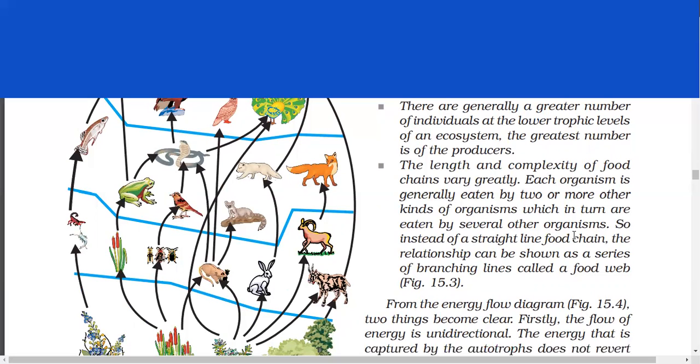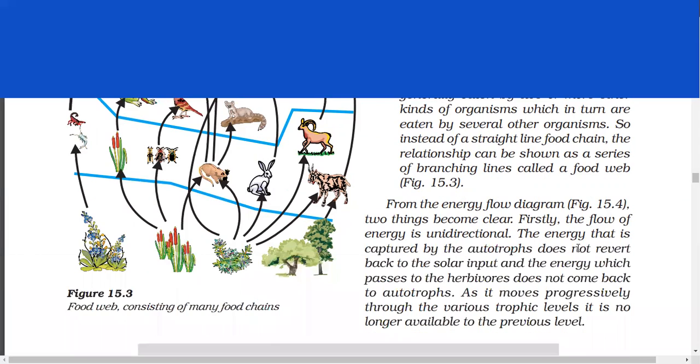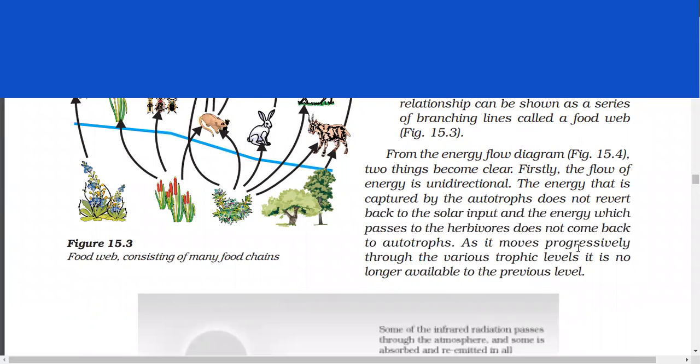Each organism is generally eaten by 2 or more other kinds of organisms which in turn are eaten by several other organisms. So, instead of a straight line food chain, the relationship can be shown as a series of branching lines called a food web. From the energy flow diagram, two things become clear. Firstly, the flow of energy is unidirectional. The energy that is captured by the autotrophs does not revert back to the solar input and the energy that passes to the herbivores doesn't come back to autotrophs. As it moves progressively through the various trophic levels, it is no longer available to the previous level.